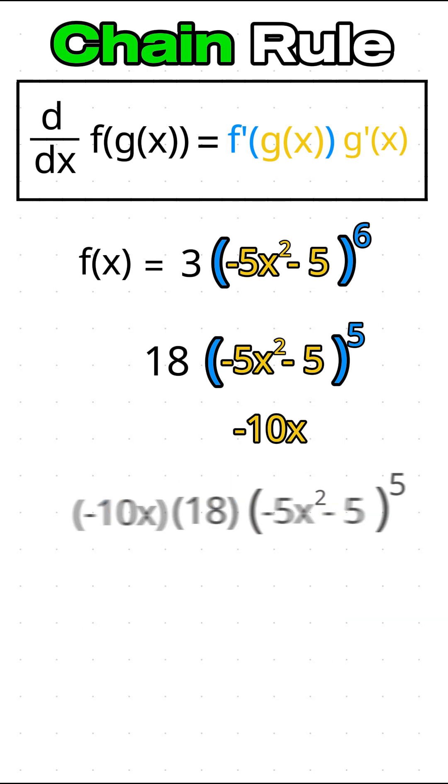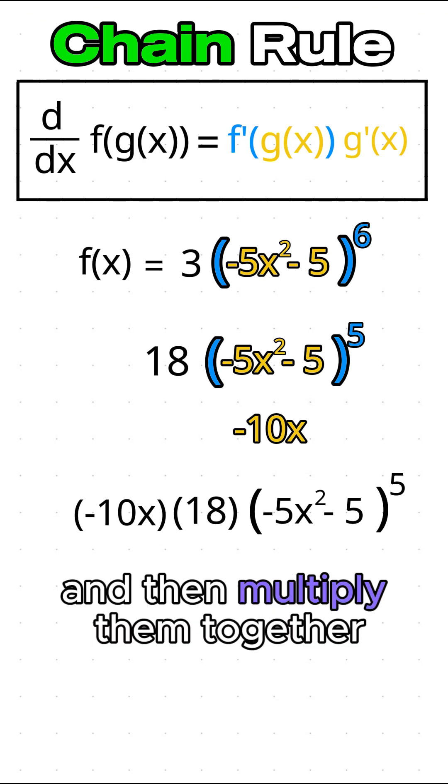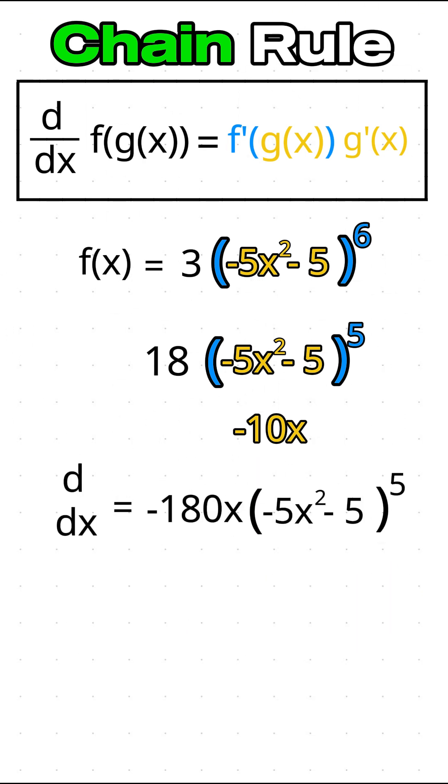Now, the final step is to simplify. We can move all the coefficients to the front, as that's the convention, and then multiply them together. This gives us the final answer of negative 180x multiplied by negative 5x squared minus 5 to the 5th power.